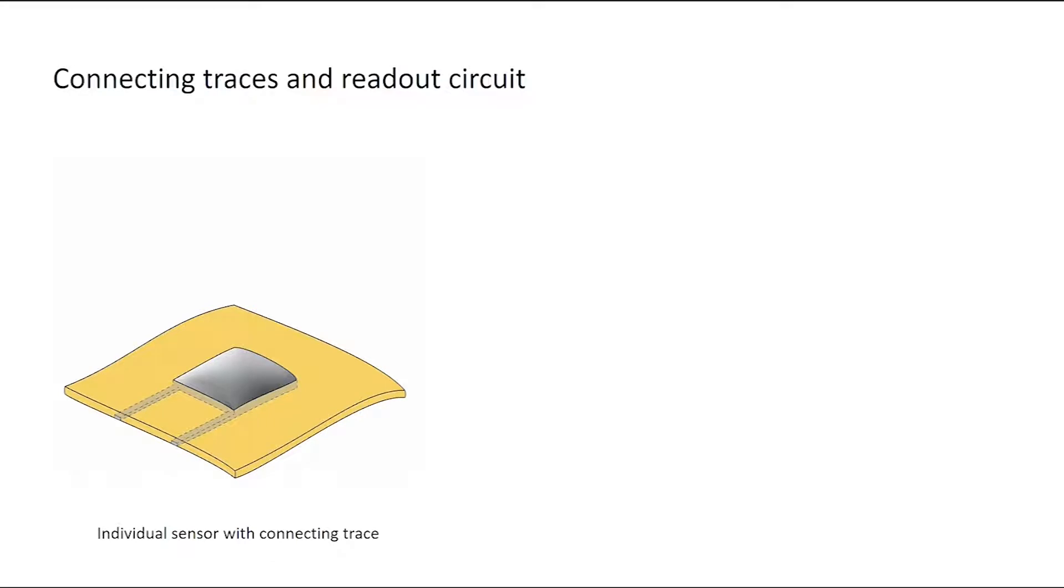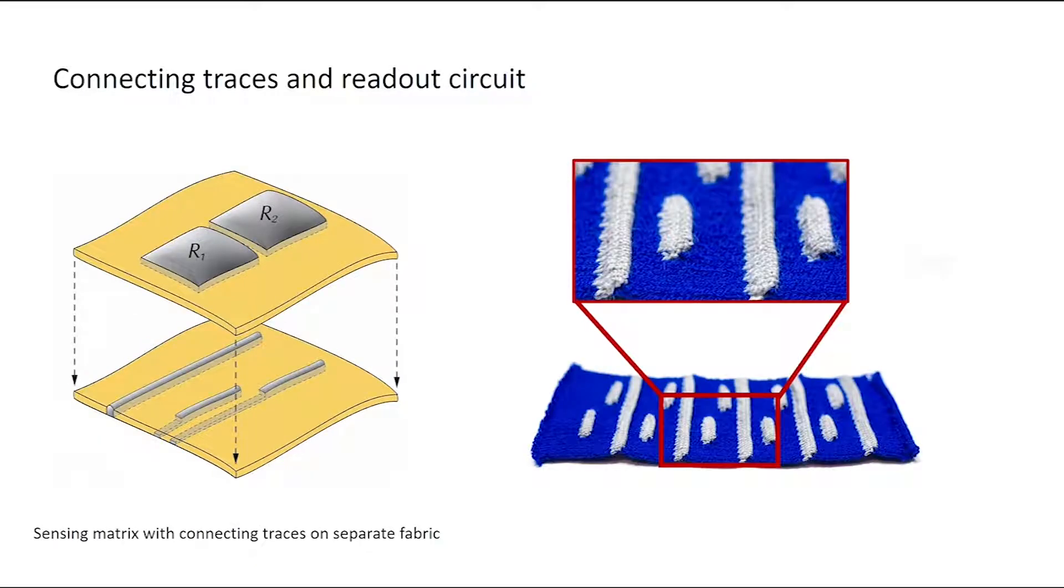To connect the individual sensing units to the readout circuit with minimal labor, we create coupled conductive traces at the bottom layer on the same fabric. For a sensing matrix with multiple aligned sensors, to avoid any shortings, we further design an extra double-layered knitting fabric with isolated conductive traces.